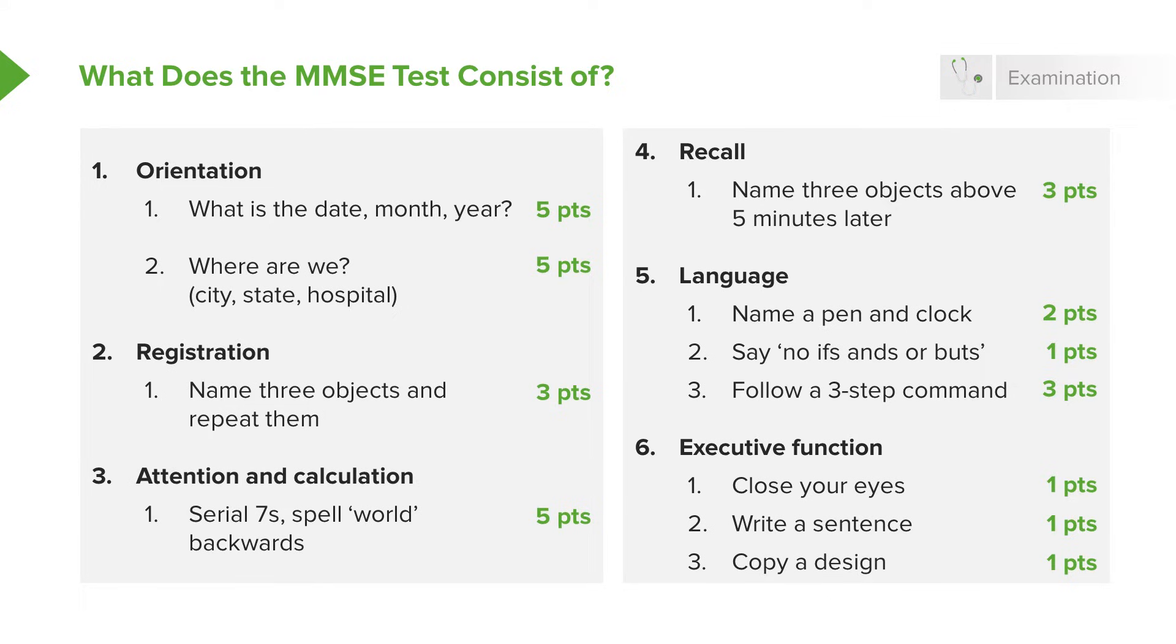You may also, as part of this exam, throw in some abstractions to see how well they can join objects together. Do they know that an apple and an orange are similar because they're fruits? That's a good example of an abstract thinker, whereas somebody who's more concrete is going to say, well, they're both round, which is not so good of an answer.